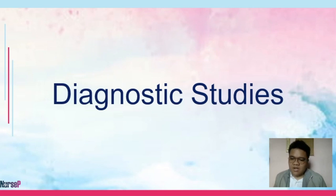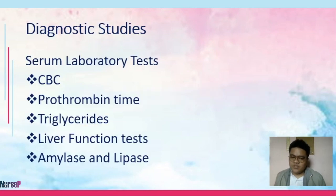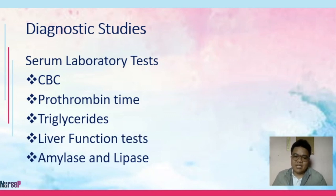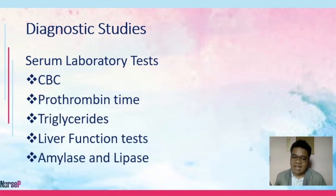In this section, we discuss diagnostic studies relevant to gastrointestinal system assessment. First, serum laboratory tests — your CBC or complete blood count. One complication we may encounter in a GI patient is gastrointestinal bleeding, so we watch out for hemoglobin and hematocrit. A decrease in hemoglobin, hematocrit, and RBC may indicate severe bleeding, with signs such as melena.